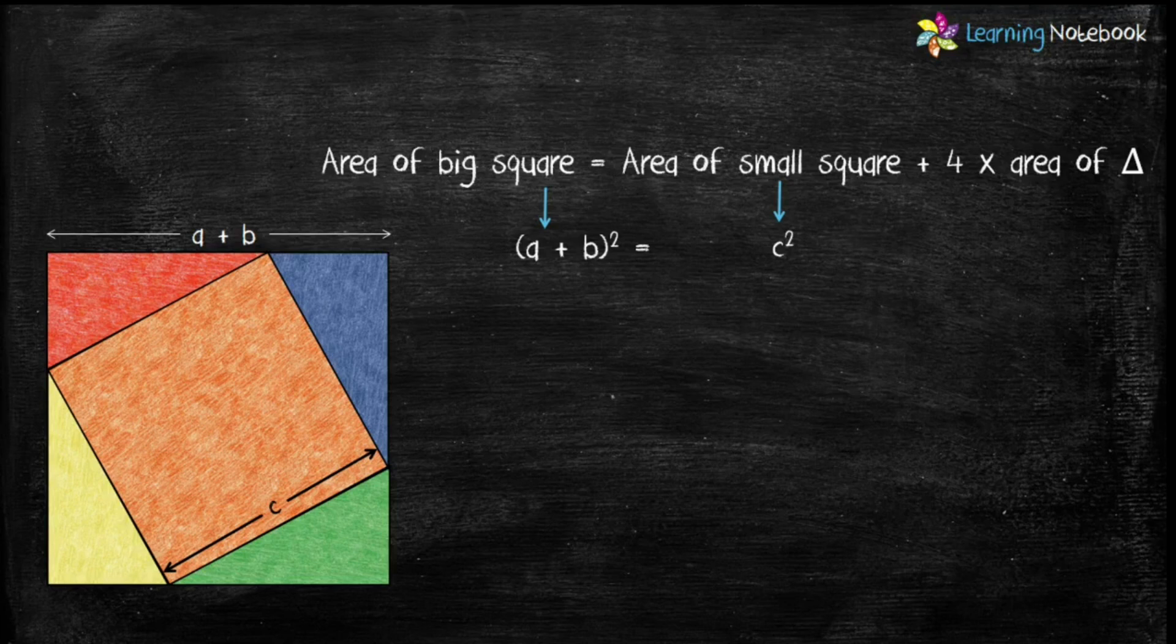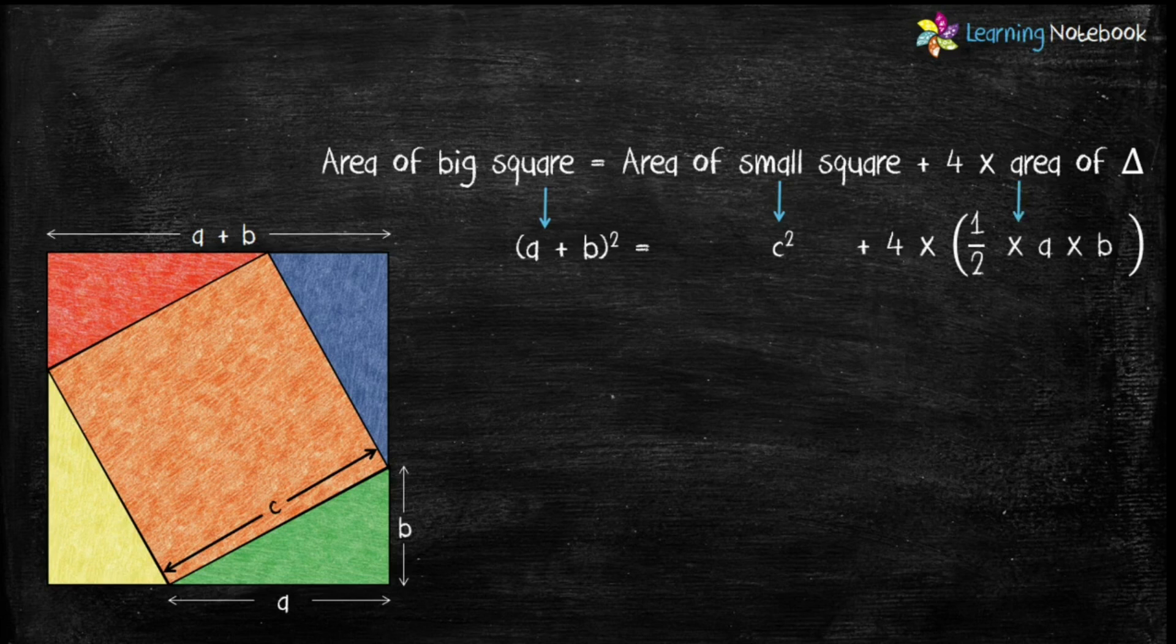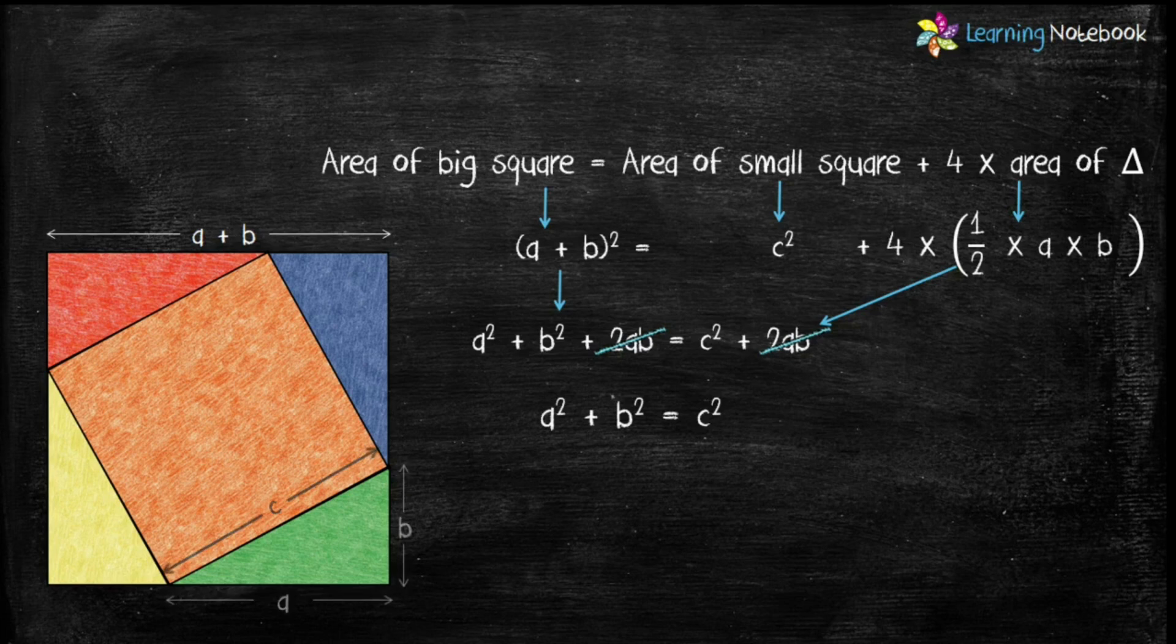Now area of one triangle is ½ × a × b. Therefore, area of four triangles will be 4 × ½ × a × b. So students, we know (a + b)² = a² + b² + 2ab, and 4 × ½ × ab = 2ab. Cancel 2ab on both sides and we get a² + b² = c².